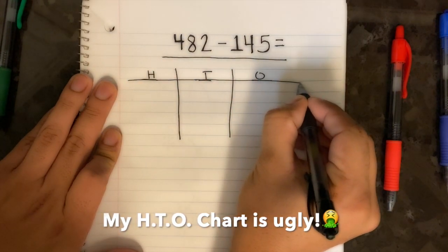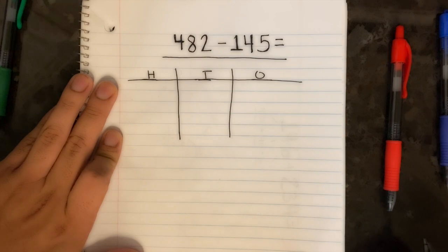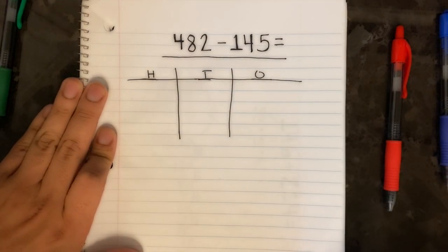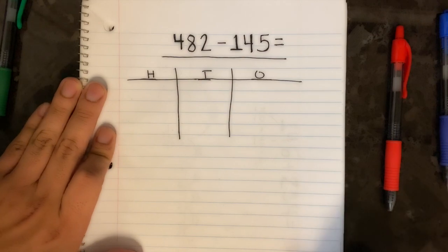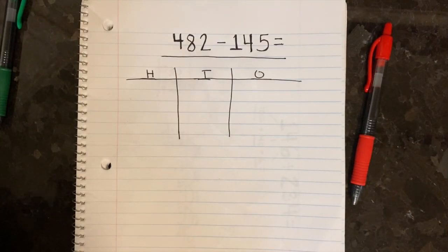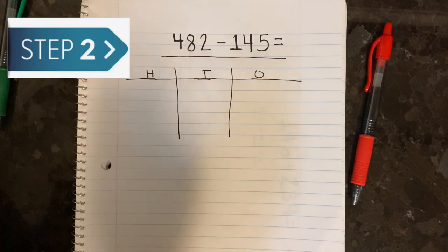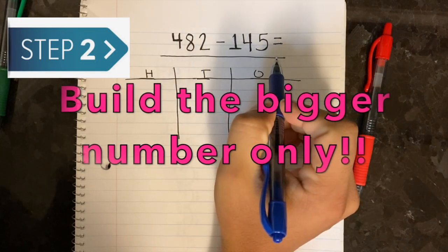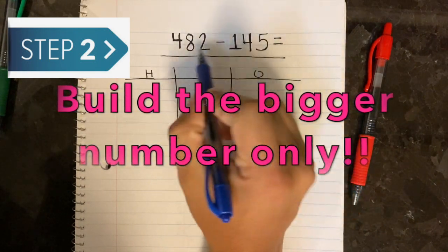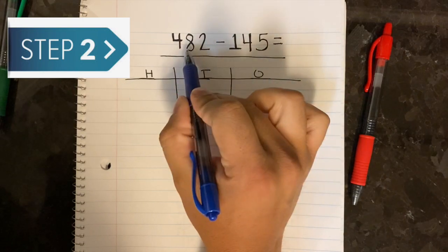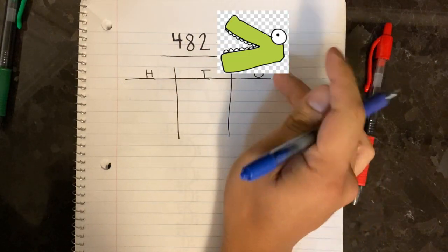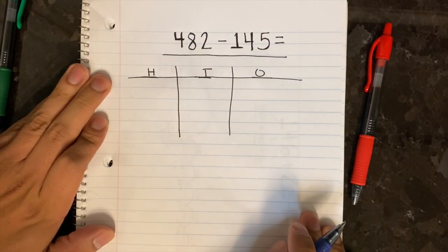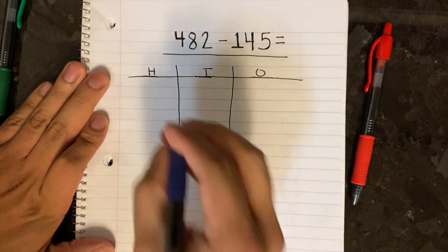It's a little sloppy but it'll work. Now that we have step one down and our HTO chart is ready, we're on to step two. For step two, you're going to want to build the bigger number only. Take a look at these two numbers — which one is bigger? 482. We're going to build the bigger number only.